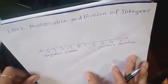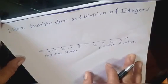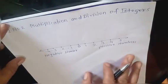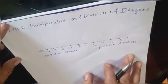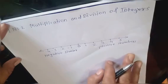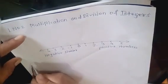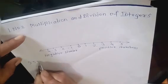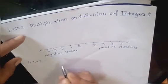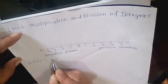Now see in your book — there is a revision section. In the previous class we learned to add and subtract integers, and that is given in revision. The first example is 5 plus 7. What is the answer?